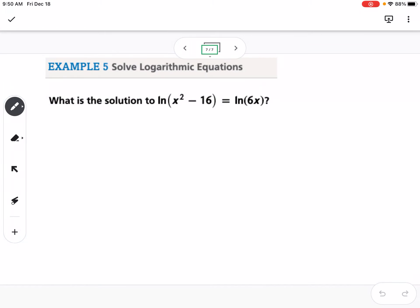Our last example is solving a log equation. We have natural log of x squared minus 16 equals natural log of 6x. For this, we know because it's natural log of something equals natural log of something, it's that one-to-one property. It's kind of like when we had 2 to the something power equals 2 to the something power. We know that x squared minus 16 has to equal 6x because of the properties of logs.